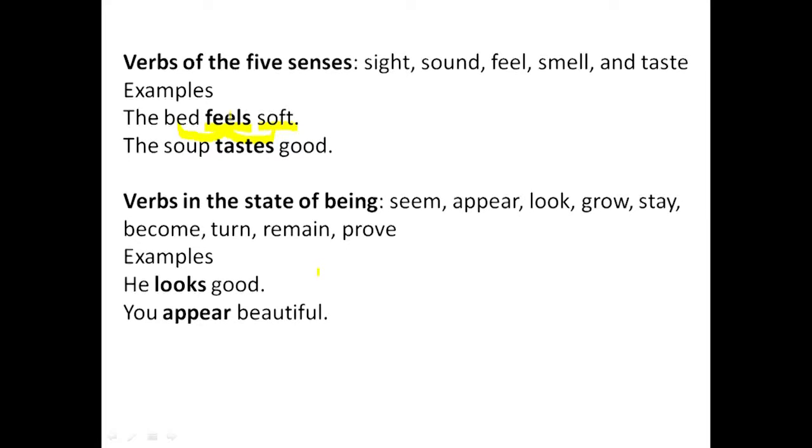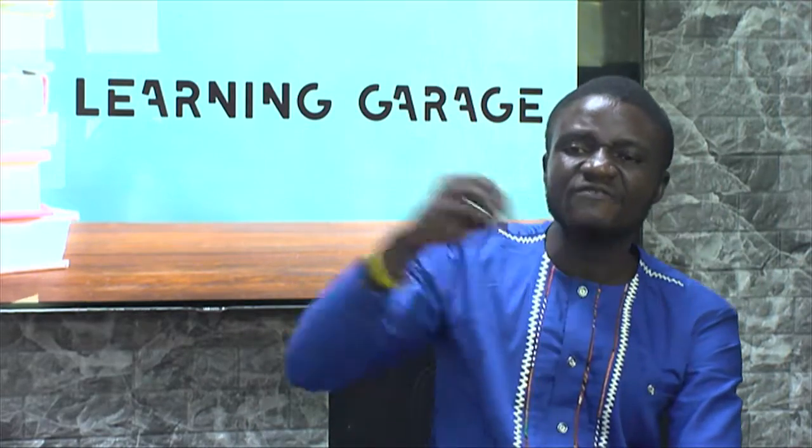When you replace the five senses verbs with verb to be, if they make sense, then the taste, feel, or smell is a linking verb. But if it fails to make sense, it's an action verb. Example: the soup tastes good. Taste links soup to the word good, which describes the subject. Substitute is — the soup is good — it makes sense. So taste is a linking verb. That's the litmus test: substitute verb to be and if the sentence makes sense, it is a linking verb.